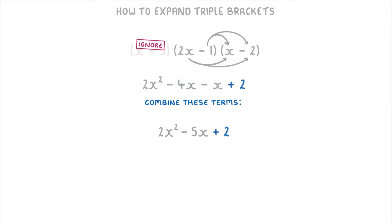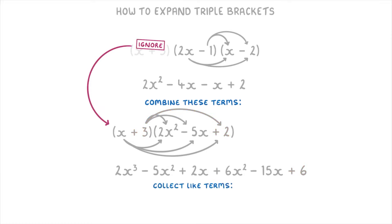Next we need to put brackets around this answer and multiply it all by the x plus 3 that we were ignoring. So again we draw all of our arrows from our x and from our 3 and then work out all of the multiplications. From our x we'd get 2x cubed minus 5x squared plus 2x, and from the 3 we'd get 6x squared minus 15x plus 6. Then you can collect together your like terms and we'd end up with 2x cubed plus x squared minus 13x plus 6.